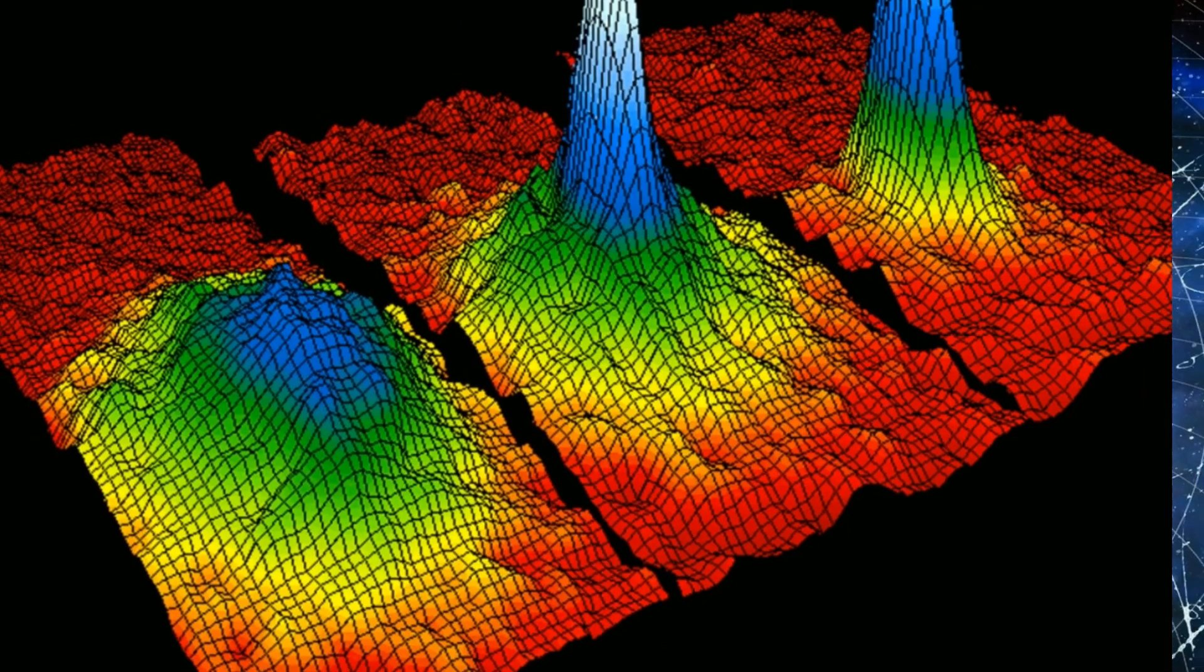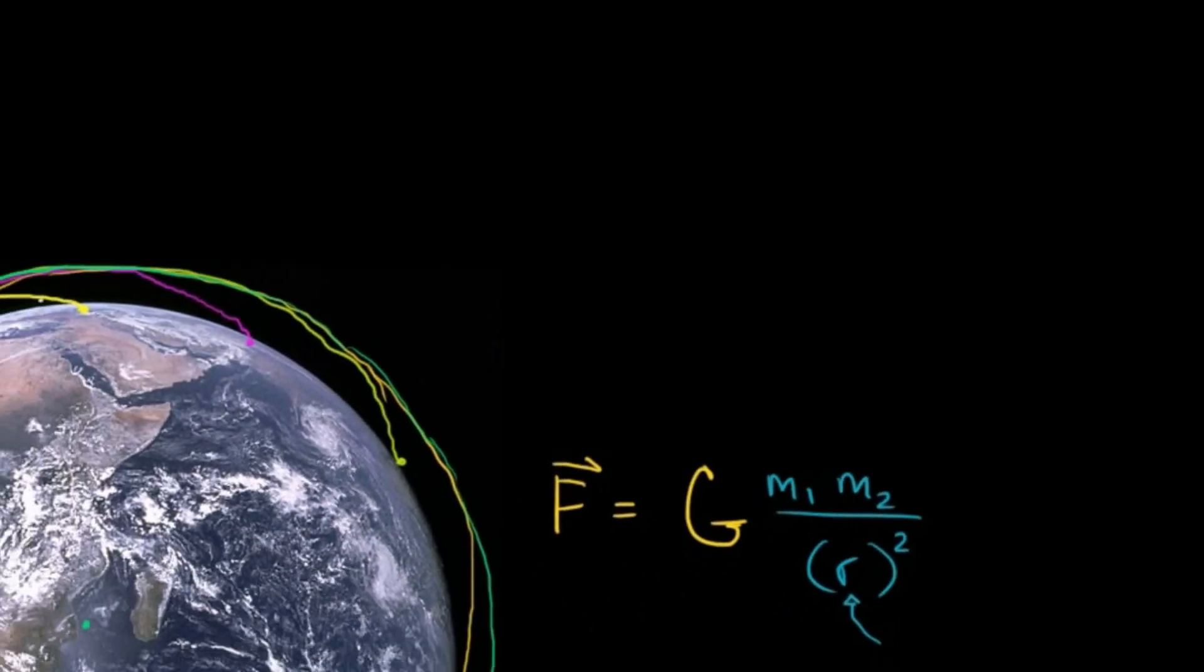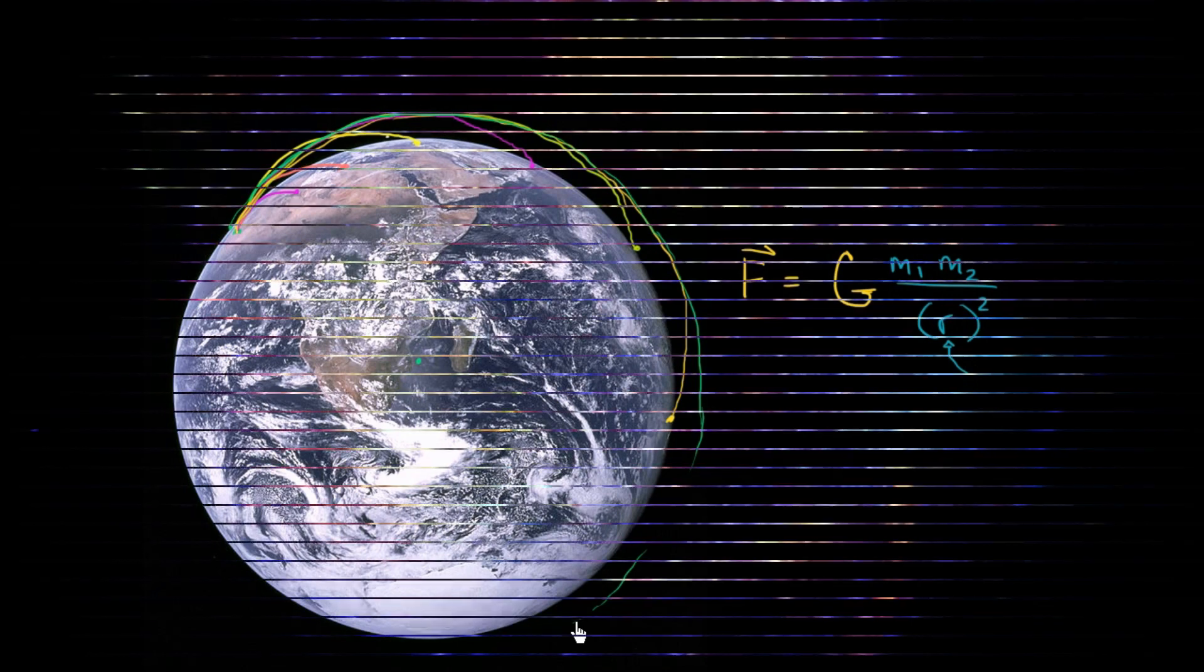Antimatter is identical to matter in gravitational properties. No, they don't have negative mass. Particles of antimatter are attracted to Earth the same way as matter is.